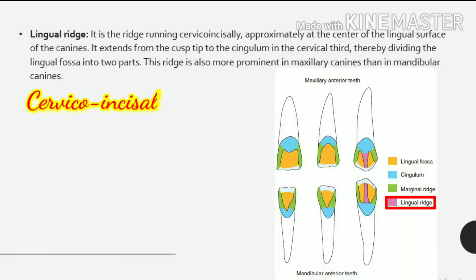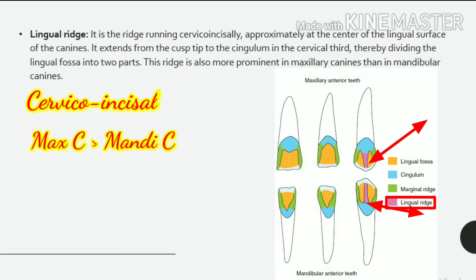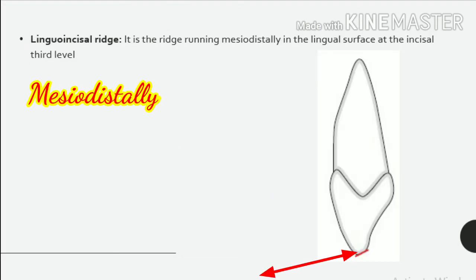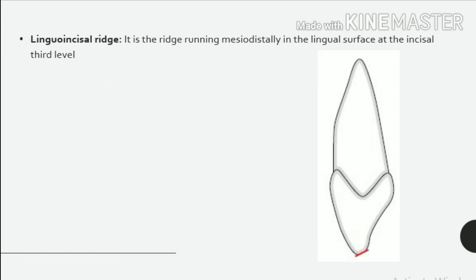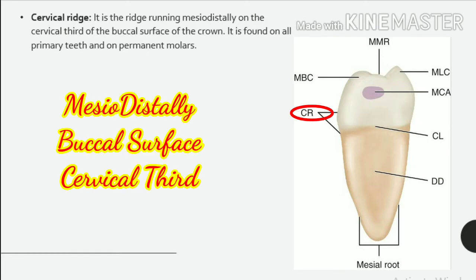Lingual ridge: it is the ridge running cervico-incisally, approximately at the center of the lingual surface of the canines. It extends from the cusp tip to the cingulum in the cervical third, thereby dividing the lingual fossa into two parts. This ridge is more prominent in maxillary canines than in mandibular canines. Lingoincisal ridge: it is the ridge running mesiodistally in the lingual surface at the incisal third level. Cervical ridge: it is the ridge running mesiodistally on the cervical third of the buccal surface of the crown, found on all primary teeth and on permanent molars.